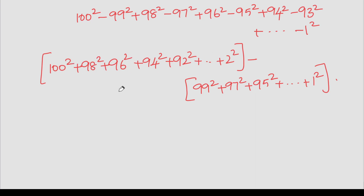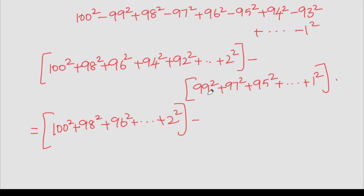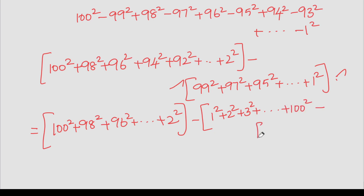The first series is: 100 square plus 98 square plus 96 square, up to 2 square. Now there is one to 99 for odd numbers. How to solve this second series? This is not a direct formula. So we take: 1 square, 2 square — total sum of squares of 100 — we can solve this, minus the sum of even number squares: 2 square, 4 square, 6 square, up to 100 square.